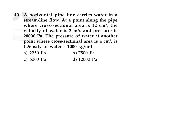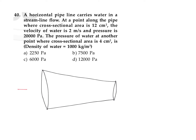We are considering a horizontal pipeline carrying water in streamlined flow. Since it is horizontal, the gravitational potential energy will be the same at point 1 and point 2. At the first region, the cross-sectional area A1 is equal to 12 centimeter square, and at the second region A2 is equal to 4 centimeter square.